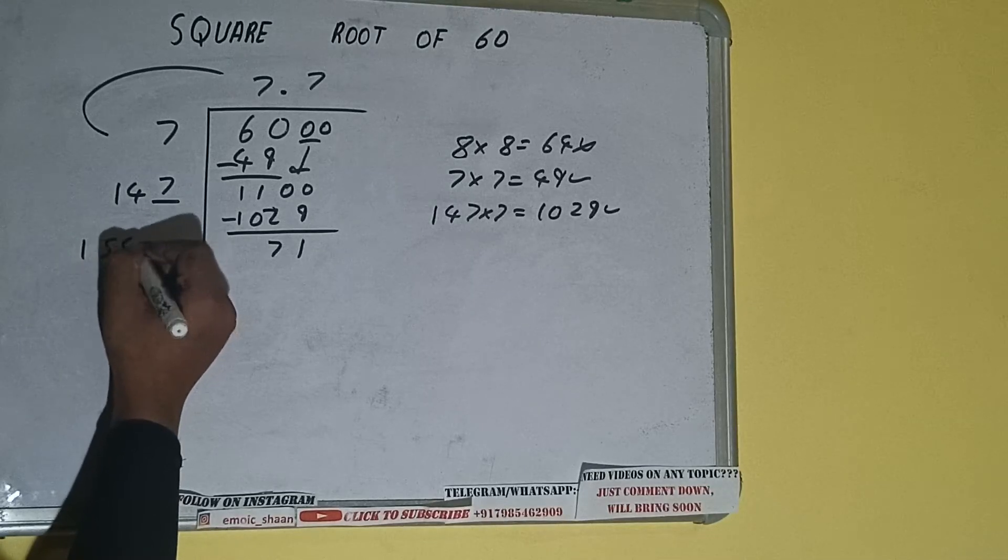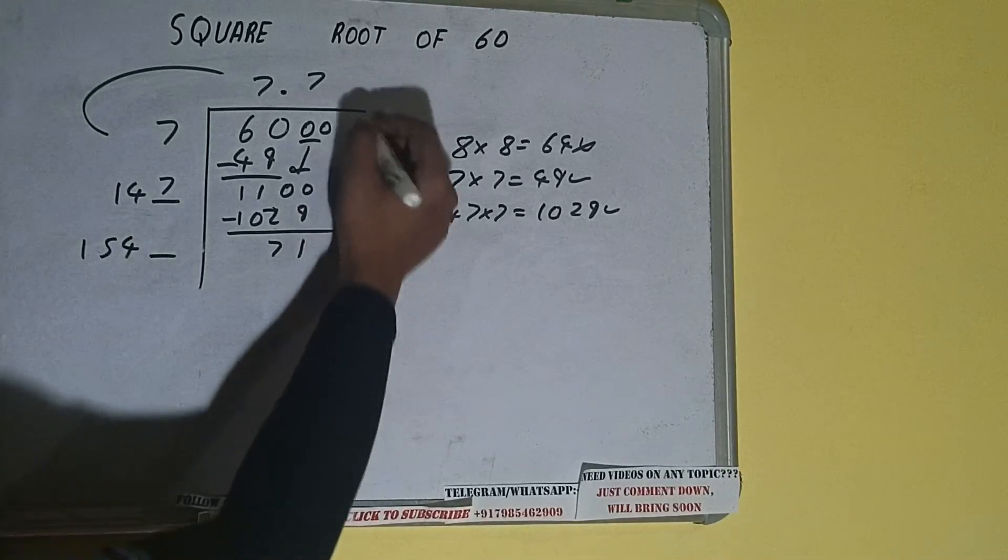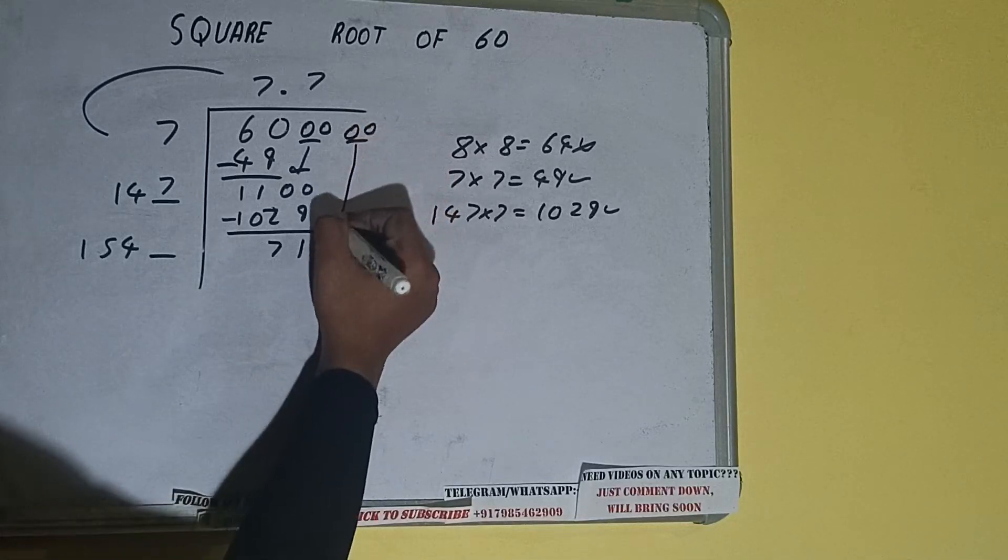Now 147 into 7 we did, so add both. So 147 plus 7 will be 154 and 1 digit extra. And this number we need to make it big, so bring the next pair of zeros down, and it will be 7100.